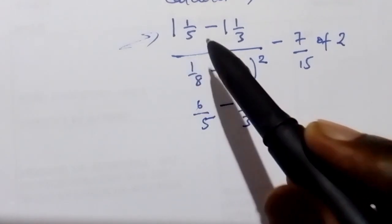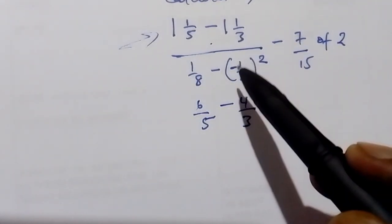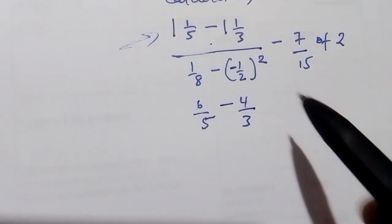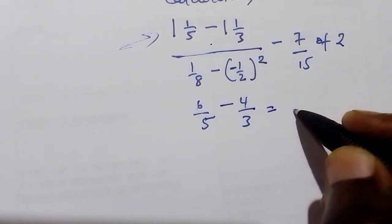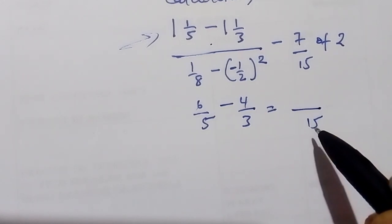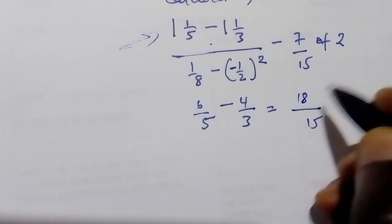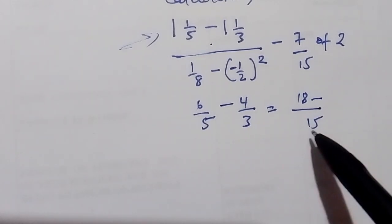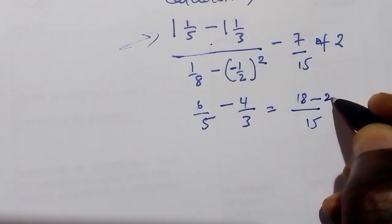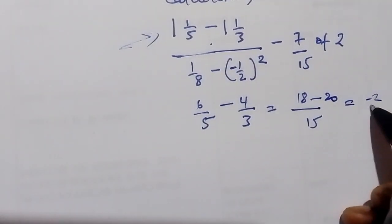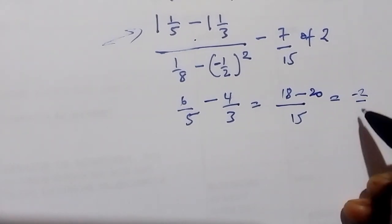We want to put the numerator under one denominator, so we find the LCM of 5 and 3, which is 15. 5 goes into 15 three times: 3 times 6 is 18. 3 goes into 15 five times: 5 times 4 is 20. So here in the numerator we get negative 2 over 15.